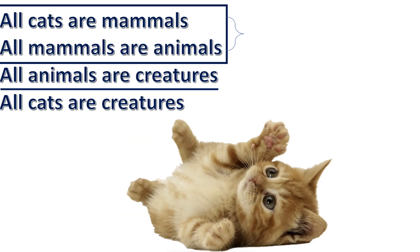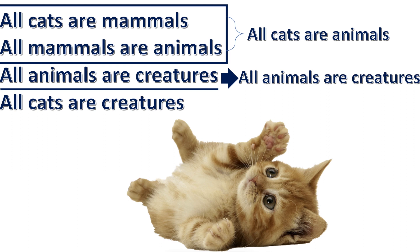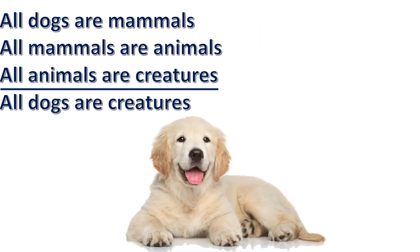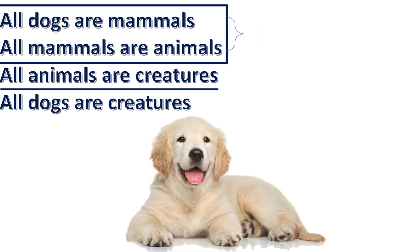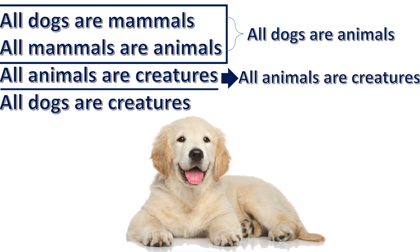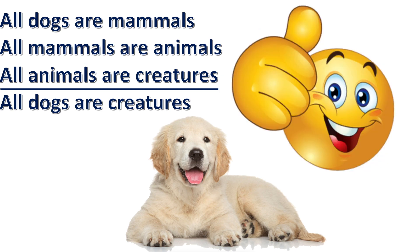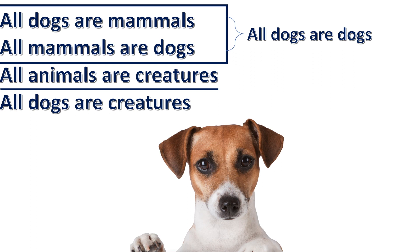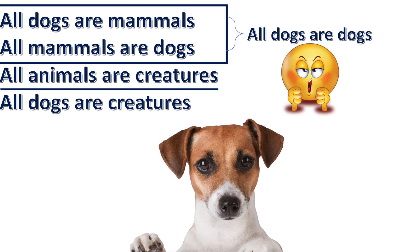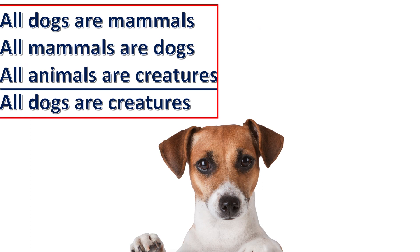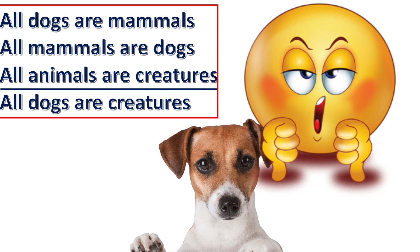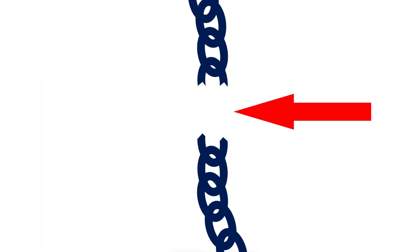The conclusion of each syllogism is a premise for the next and so on. Now to test a sorites, you must put forth the intermediate conclusions and then test each of the individual syllogisms. If each syllogism is valid, then the sorites is valid. But if one of the individual syllogisms is invalid, then the entire sorites is invalid. It's like a chain that is only as strong as its weakest link.